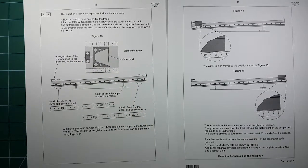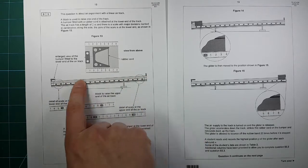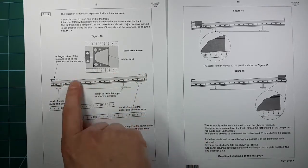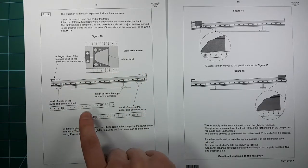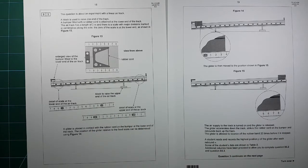So on to question three now, the last one in this section. We've got this air track and we're bouncing a car backwards and forwards like this. This is another question about taking readings and being careful about doing so.